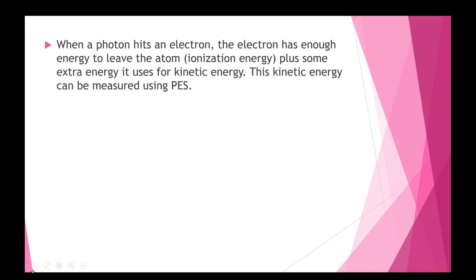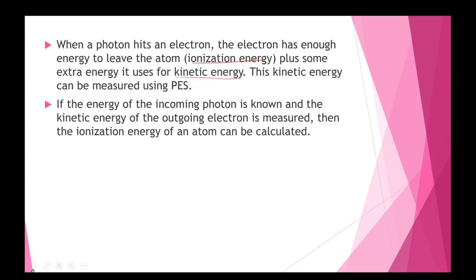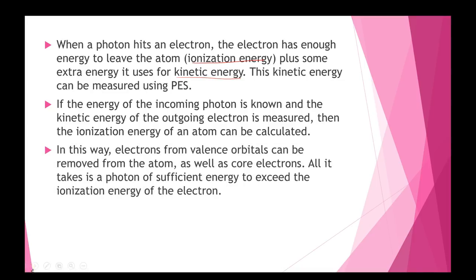So when a photon hits the electrons, the electron has enough energy to completely leave the atom. That's called ionization energy. The extra energy it uses for kinetic energy, velocity. And we can measure that. But if we know the energy of the incoming photon, which we do because we'll know its frequency, and the kinetic energy of the outgoing electron is measured, then all you have to do is subtract to find the ionization energy. And that's how they figure it out. You can do valence orbitals, so the ones that are on the outside edge of the atom. But if you add enough energy, you can pop off these core electrons all the way down to where you have nothing left except the nucleus. You've literally pulled all the electrons off if you use a photon that has enough energy.